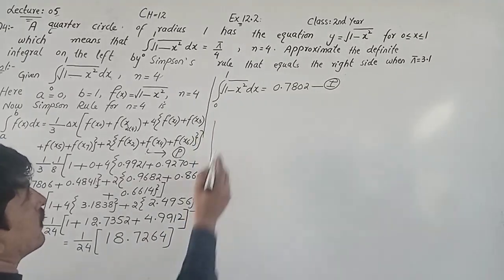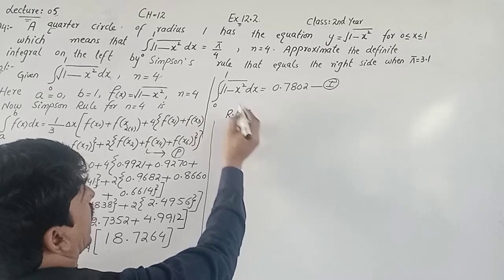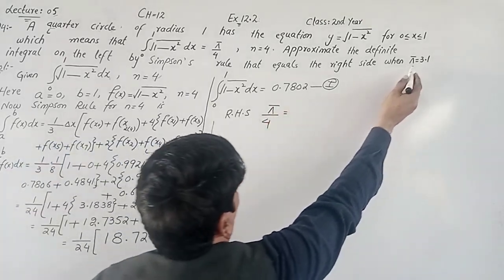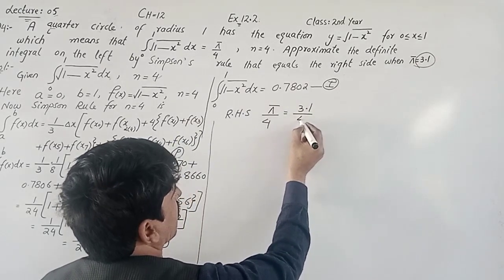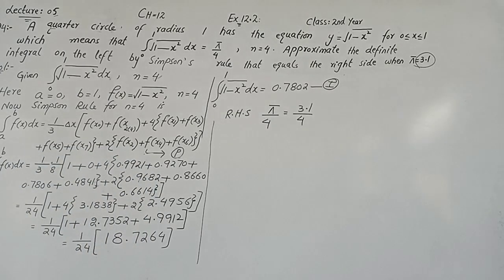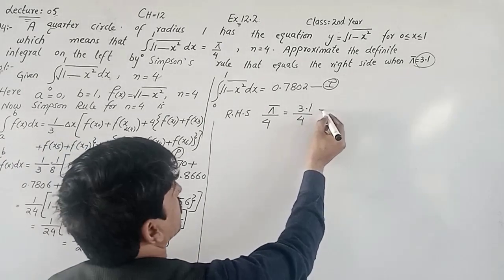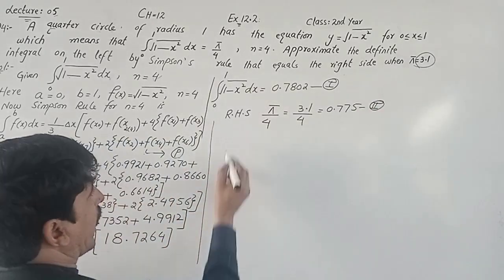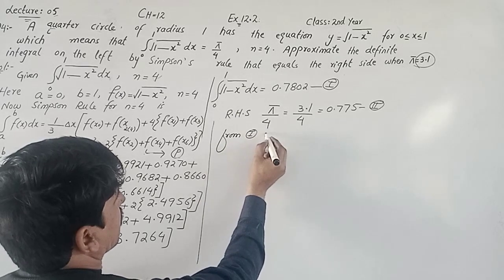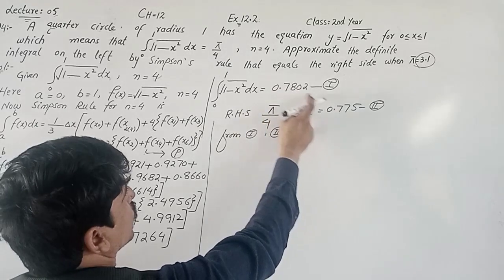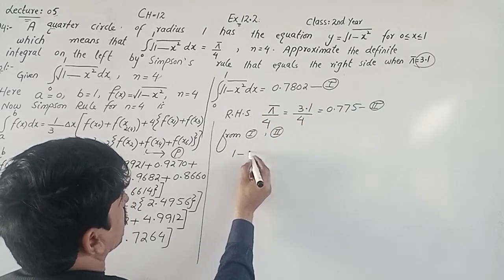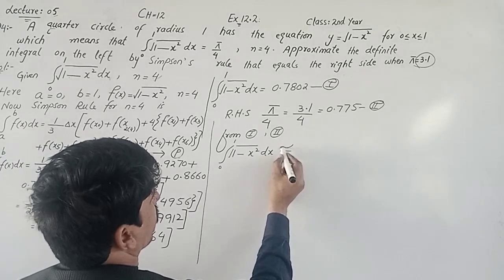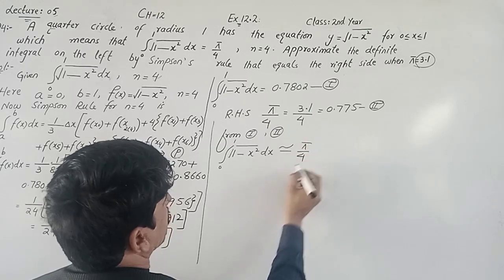Now taking the right-hand side, π/4 ≈ 3.1/4 = 0.775. This is equation 2. From equations 1 and 2, we see that these two values are approximately equal, so ∫₀¹ √(1−x²) dx ≈ π/4.